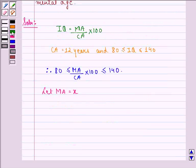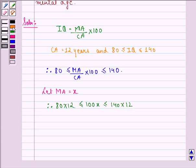Therefore, 80 times 12 is less than or equal to 100X is less than or equal to 140 times 12. These are two inequalities and we shall solve them simultaneously.